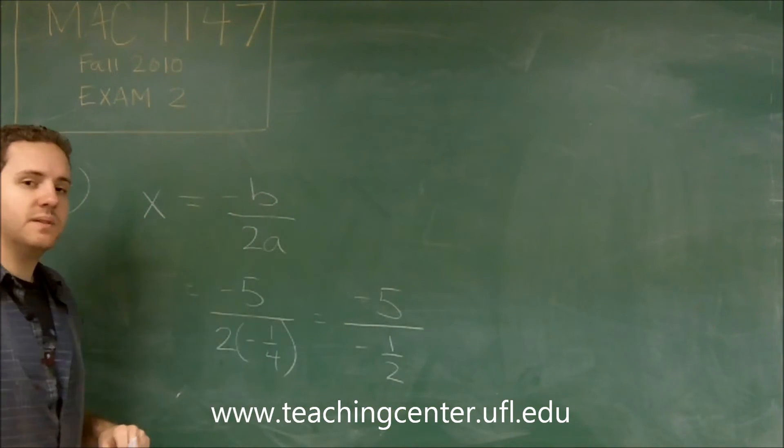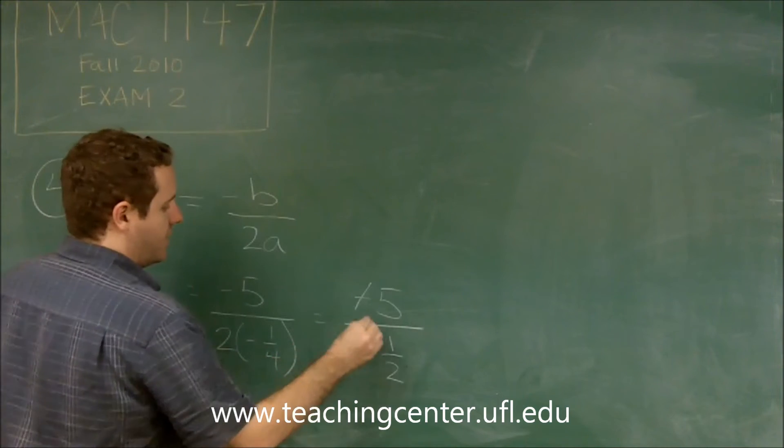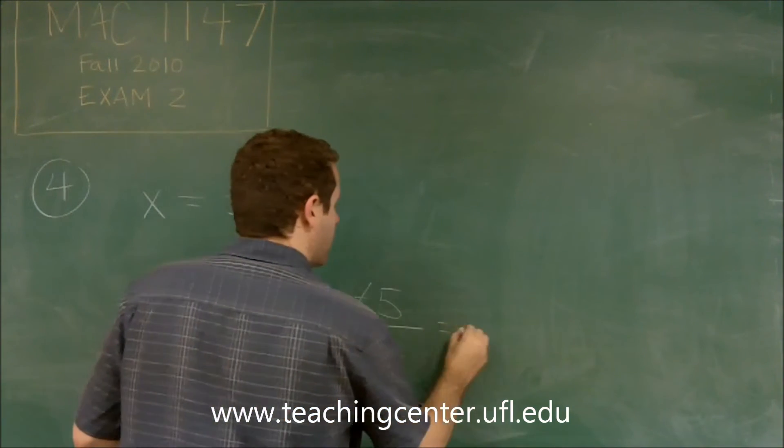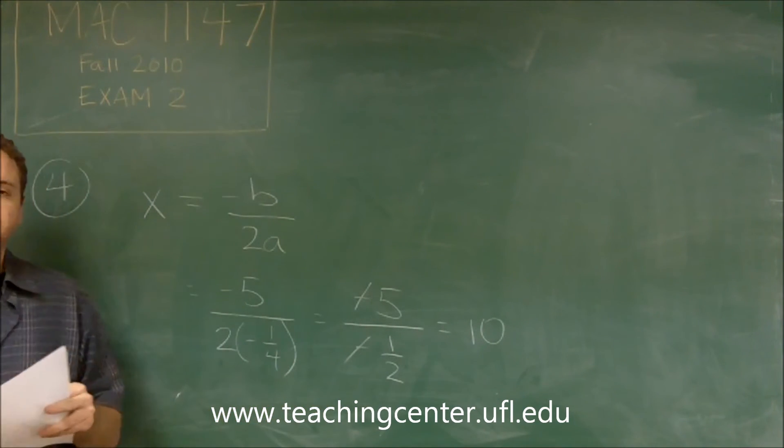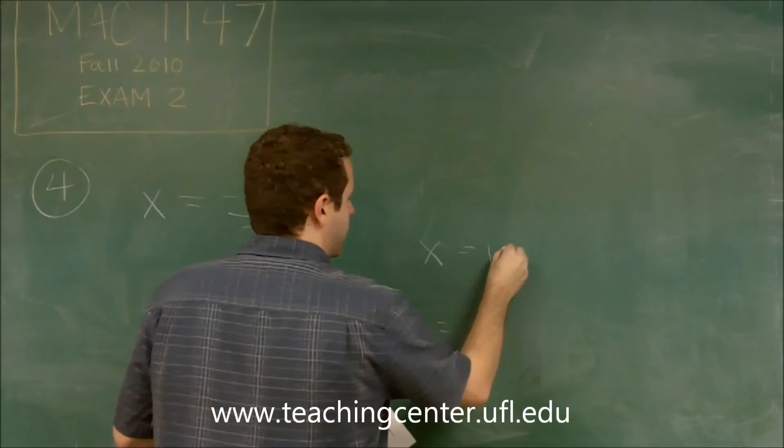Divided by 1 half is the same thing as multiplying by 2, and these negatives cancel out. So here we get 10. So our axis of symmetry would be x equals 10.